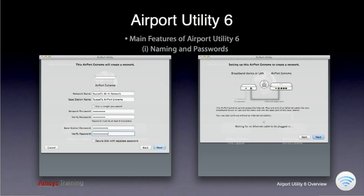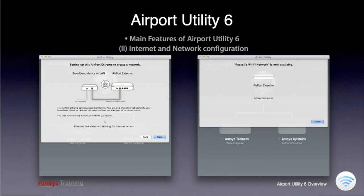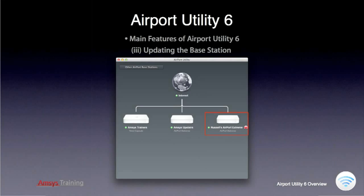After clicking Next, the Assistant will verify the incoming connection to your Base Station and give you a graphical warning if there is no internet connection responding. Once the internet connection into your Base Station is working, the Assistant will complete the setup. On clicking Done, the Base Station should appear with its configured Base Station name in a list of configured base stations.